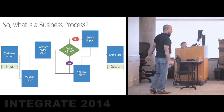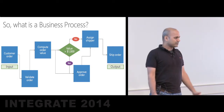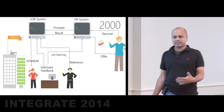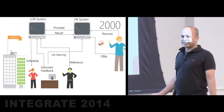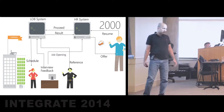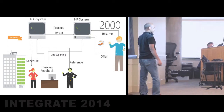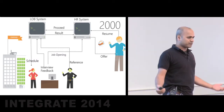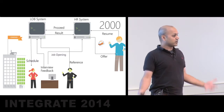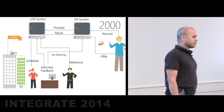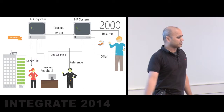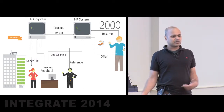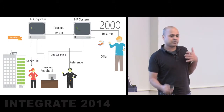Now that we have a common understanding of a business process, let's look at how business processes are changing. Bill earlier talked about changes in the integration space — let's see how it is impacting a business process. Take a simple example: the hiring process in a large enterprise. In 2000, there would be an HR system, the hiring manager opens a job request, and the candidate discovers it and submits a resume.